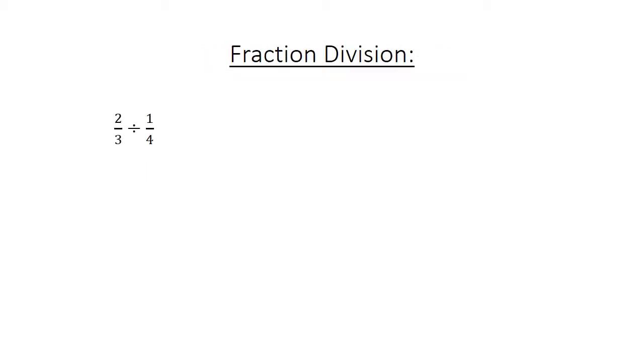Fraction division: 2 over 3 divided by 1 over 4 equals 2 over 3 times 4 over 1, which equals 8 over 3.